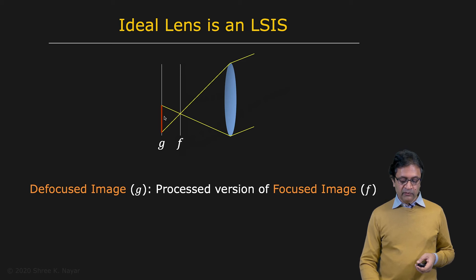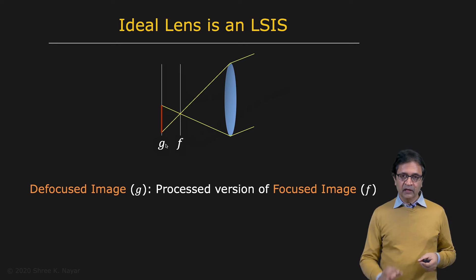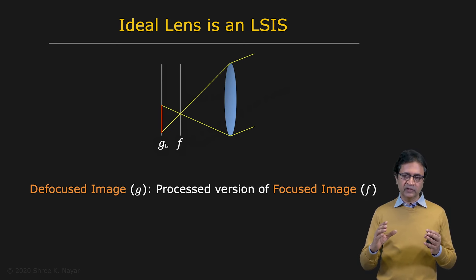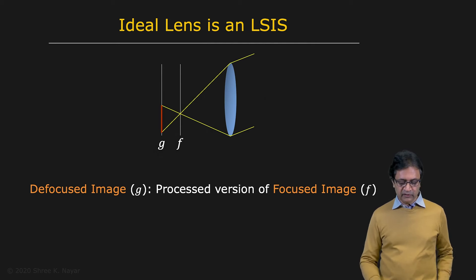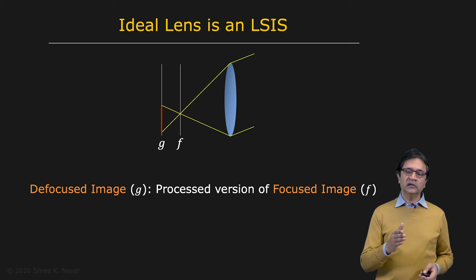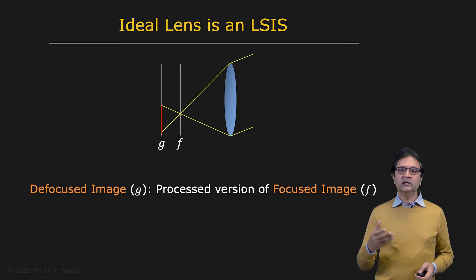And then if you move the image plane back, you're going to get a defocused image — we know this from our previous lecture on image formation. That image is g. Let's not be concerned here with the change in magnification between g and f; let's say there is no change in magnification. And now we see that the relationship between f and g is described by a linear shift invariant system.